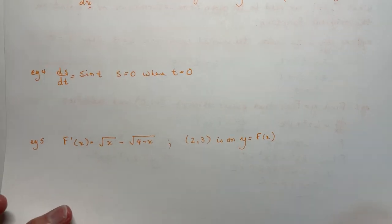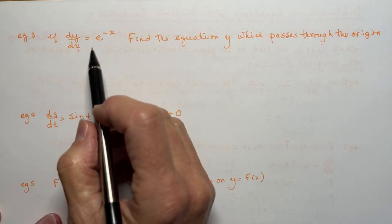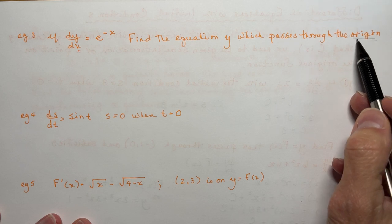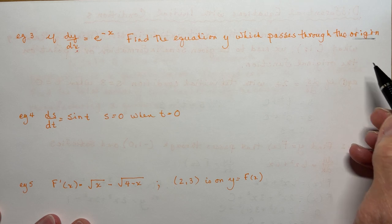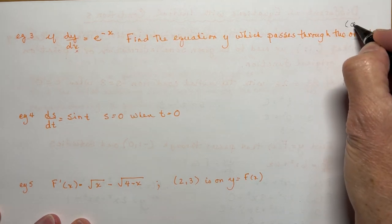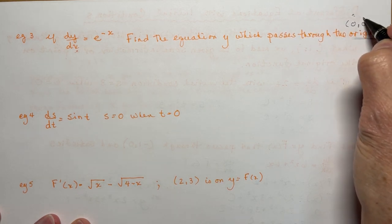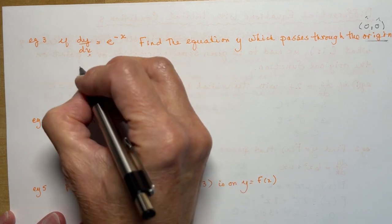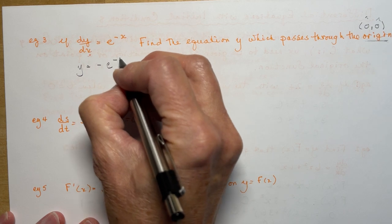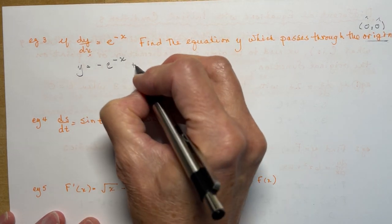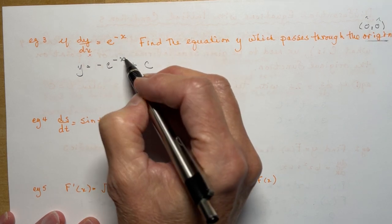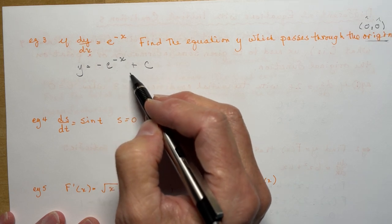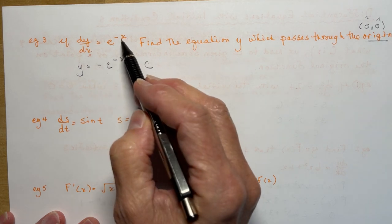Now let's look at: if dy/dx equals e to the negative x, find the equation y which passes through the origin — that's the point (0, 0). So if dy/dx is e to the negative x, then y is going to be equal to negative e to the negative x plus c. The derivative of e to the negative x is e to the negative x times negative 1, so I need negative e to the negative x to get back to the original. Always double check that the derivative of your answer gives you the original equation.